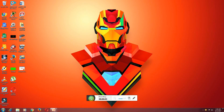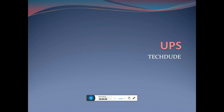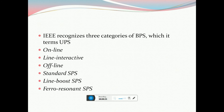Hi friends, today I will explain UPS types. All UPSs have three common elements: the first one is the battery, which stores electrical energy against power failures; the inverter, which converts DC voltage supplied by the battery to AC voltage required by the load; and the charging circuit, which converts AC mains power to DC voltage required for charging the batteries.